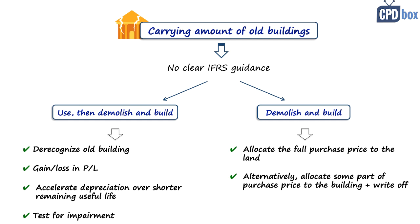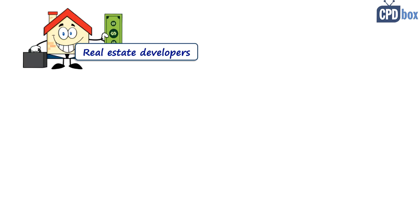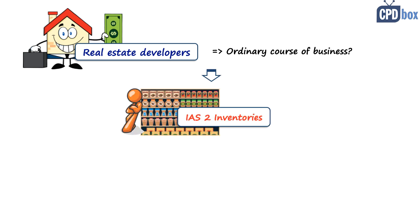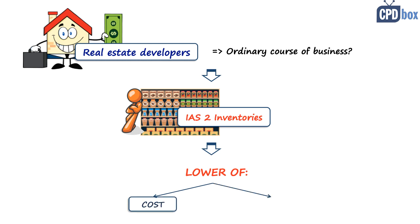Until now I've spoken about properties for own use or for rentals, which is broadly similar under IAS 40. But what about developers and constructors who buy land with buildings and demolish them in the ordinary course of their business? Here we are dealing with inventories under IAS 2. The cost of the old building and demolition costs are both treated as inventories, meaning you need to carry inventories at the lower of cost and net realizable value.